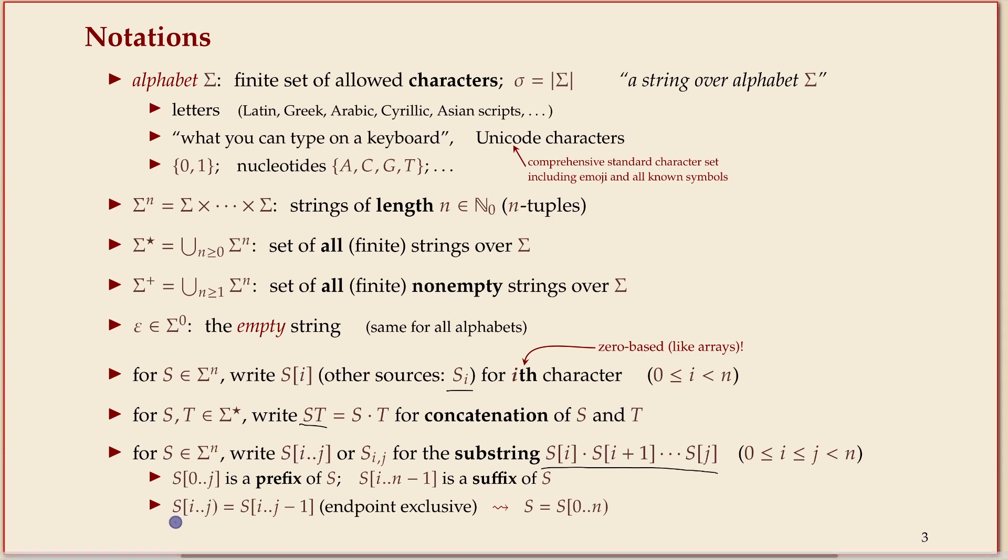We can take substrings of a string. We can take a range in the string. It can be from i up to j including, so it's all of those letters. I'll also use that notation when it's convenient, where i is included but j is excluded. We have prefix and suffix. A prefix is a substring that starts at the beginning, and a suffix is a substring that ends at the end.